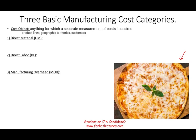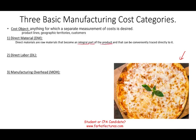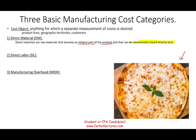Obviously the example is simplified, but by understanding the three types of cost to manufacture a pizza, the concept applies to anything else. Starting with direct material — what material do we need to manufacture the pizza? The general definition: material that becomes an integral part of the product, a main part of the product, and here's the keyword — it can be conveniently traced directly to it. So you can easily see it, trace it, and measure it.